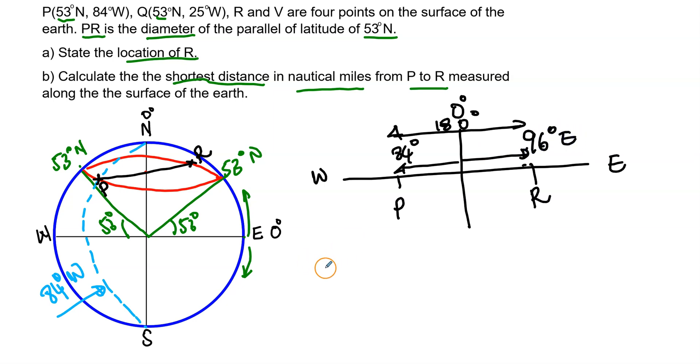So the location of R, the location of R is the latitude first, which we know is on the same latitude, 53 degrees north. And the longitude is 96 degrees east. So that is part A complete.